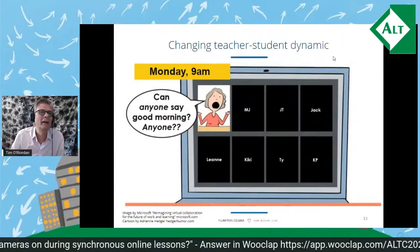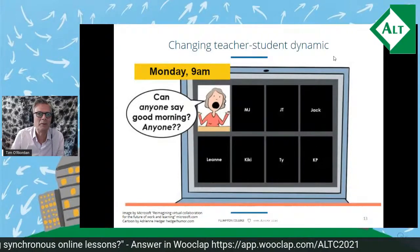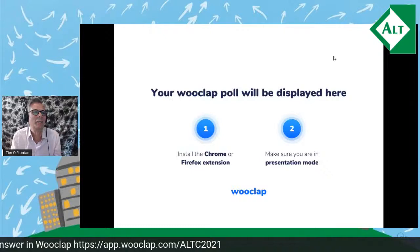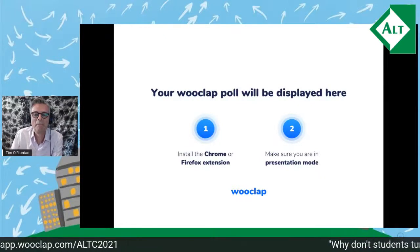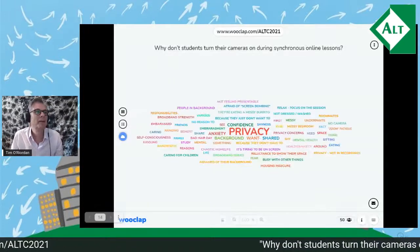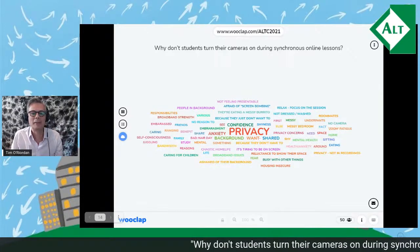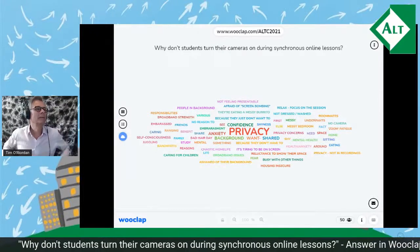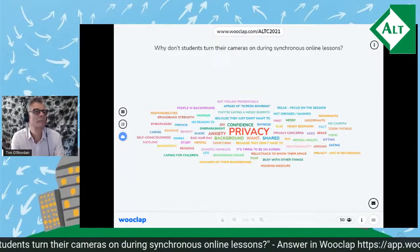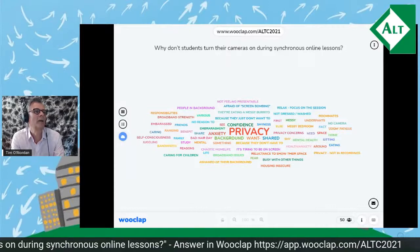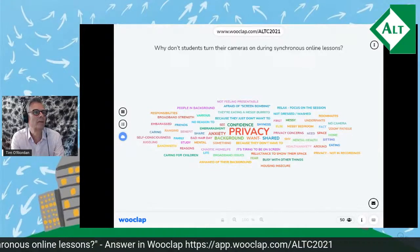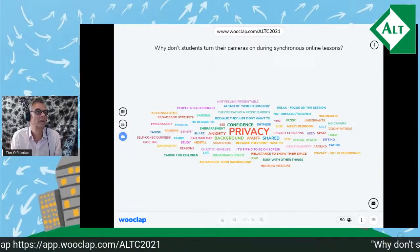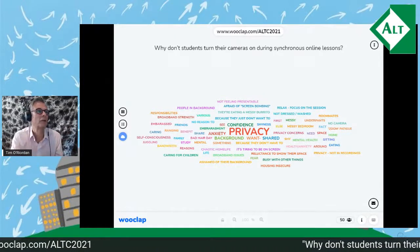So why did they do that? Let's have a look at the WooClap responses. That's amazing — thank you very much everyone. Privacy is a big one; it jumps out. Anxiety, privacy concerns, chaotic home life, it's tiring to be seen, health and anxiety, caring for children, broadband issues — so there's a technical side and a social side.